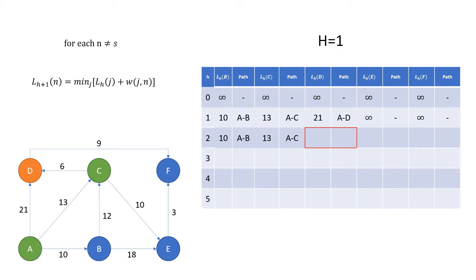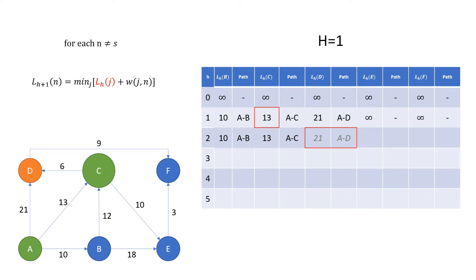We now move on to node d again. For node d, we still have two predecessor nodes, and again we cannot instantly rule any of them out. Starting with node a, performing the same calculation, we get the best current route of 21, and the path directly from node a to node d. Moving on to node c, we perform the given calculations again. In this case, the length of the route for our predecessor node c where h equals 1 is 13. We now take the weight or length of the route from our predecessor node c to our current node d. For this route, the value is 6, so the total length of this route is 19. We always want to take the minimum result for all values of j, so we can say that the shortest current route to node d is 19, and the path from node a through to node c, finishing in node d.